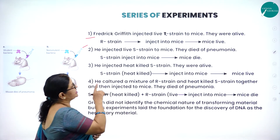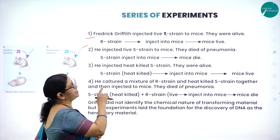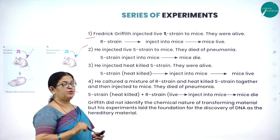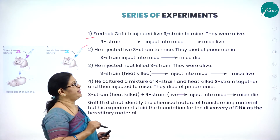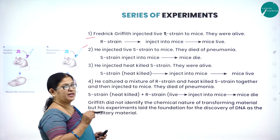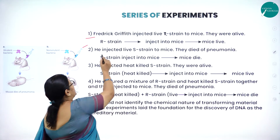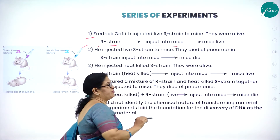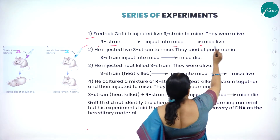In the first step, Frederick Griffith injected live R-strain into the mice. As the R-strain bacteria is non-virulent, the mice were alive — R-strain injected into the body of the mice, mice lived.